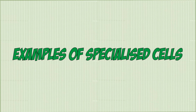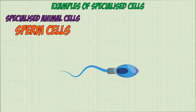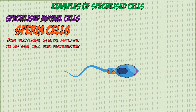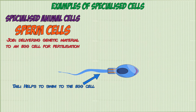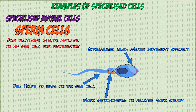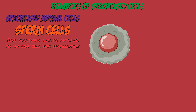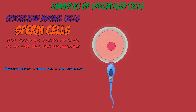Now let's look at some examples of specialized cells and how they're adapted to perform their particular functions, starting with some animal cells. First, we have sperm cells, which have the job of delivering genetic material to an egg for fertilization. They have a tail to help them swim to the egg, a streamlined head shape to make their movement more efficient, and more mitochondria than normal cells for energy production to make the journey to the egg cell.